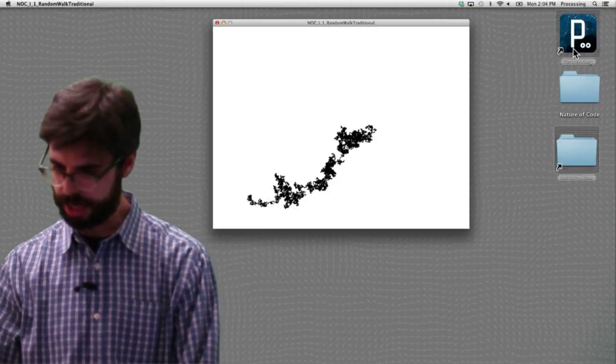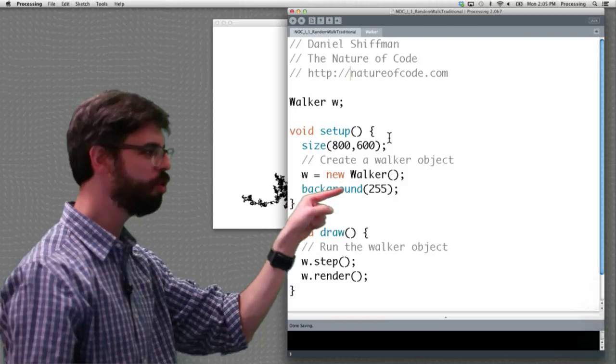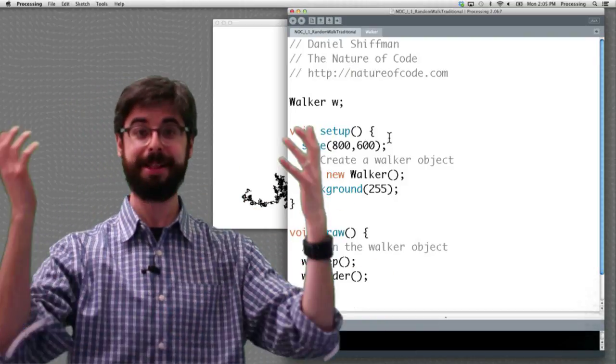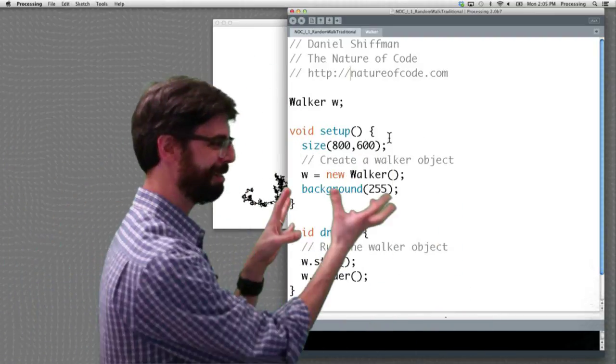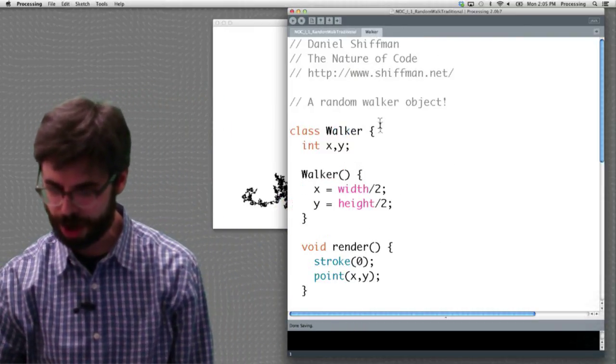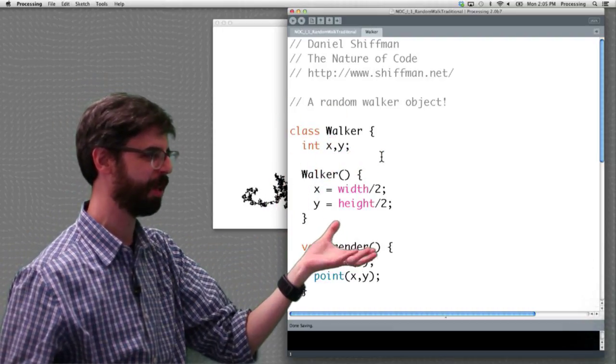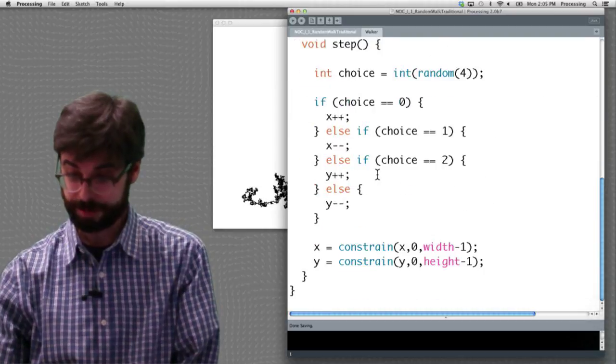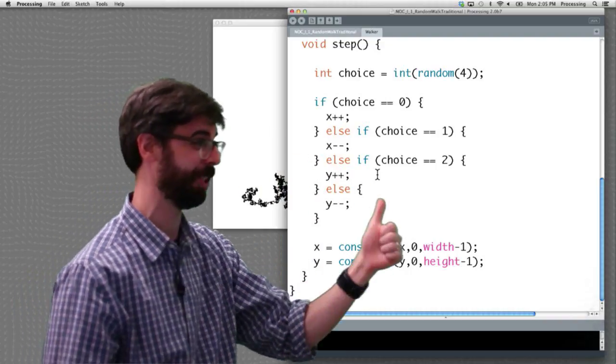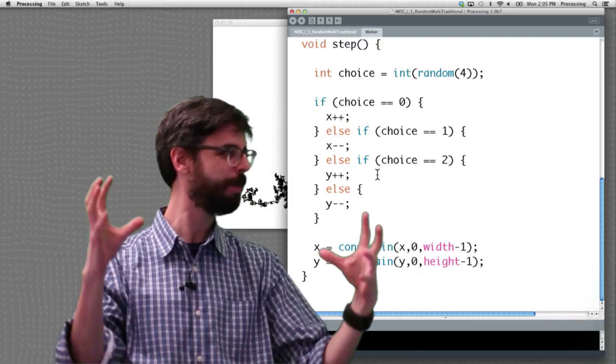Let's go see how that's implemented in the code. Now I zoom back out, and if I open this up, I've got the code, and we can see here, look, this is exactly what we talked about. A walker object. A new walker object. Walker steps and walker draws. Over there I said walk and display, now I'm saying step and render. So now if I go over here to walker, we can see the walker has two of x and a y, it's initialized in the middle of the screen, the render function draws it as a point. And now, look at this, we're using the random function of Processing to choose one of four options. x plus plus, x minus minus, y plus plus, or y minus minus, and we're keeping the walker on the screen.